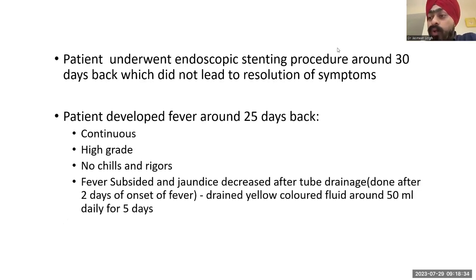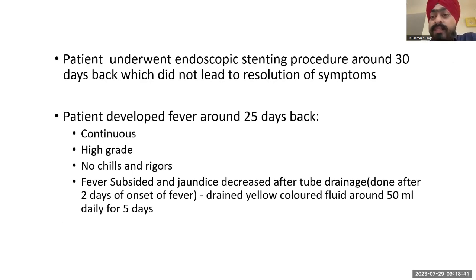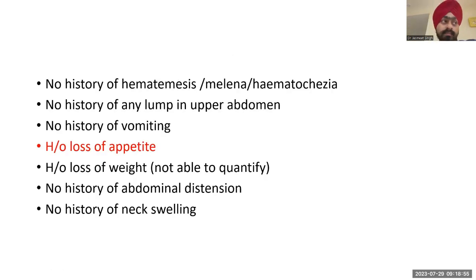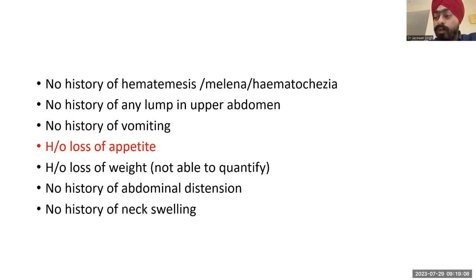The patient underwent an endoscopic stenting procedure around 30 days back, which did not lead to resolution of symptoms. The patient then developed fever around 25 days back, which was continuous, high grade, not associated with chills and rigors. The fever subsided and jaundice also decreased after the patient underwent a tube drainage done 2 days after onset of fever, which drained yellow-colored fluid around 50 ml for the next 5 days.